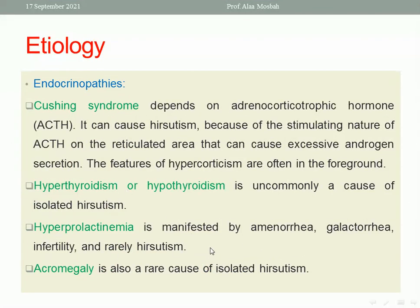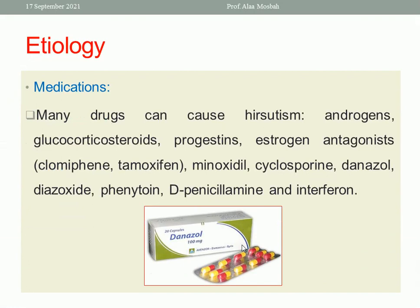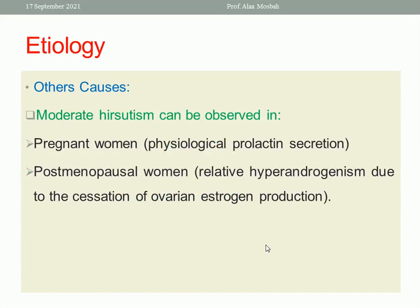Other endocrinopathies that can lead to Hirsutism include Cushing syndrome, hypothyroidism or hyperthyroidism, hyperprolactinemia, and acromegaly, though these are not very common causes. Other rare causes include medications such as danazol, cyclosporine, diazoxide, phenytoin, certain synthetic progestogens, and glucocorticoids. Hirsutism can also occur in pregnant women due to excess prolactin secretion, and in post-menopausal women due to decreased estrogen production leading to relative hyperandrogenism.